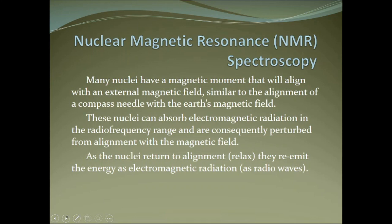The basic principle behind nuclear magnetic resonance spectroscopy is that nuclei can behave like a small magnet, and so if we put them in a magnetic field, like a compass needle, they will align with the field. We can push them away from alignment using radio waves, and when they return to alignment, they give off energy in the form of radio waves, which we can measure.